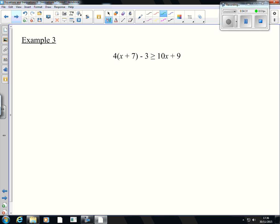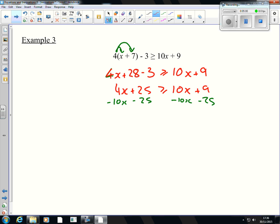Same script here, nice and easy. Expand the brackets, multiply everything by 4, it'll be 4x + 28, minus 3 is still there, is greater than or equal to 10x + 9. So, that's really 4x + 25 is greater than or equal to 10x + 9. Take away 10x, take away 10x, take away 25, take away 25, that gives me -6x is greater than or equal to -16.